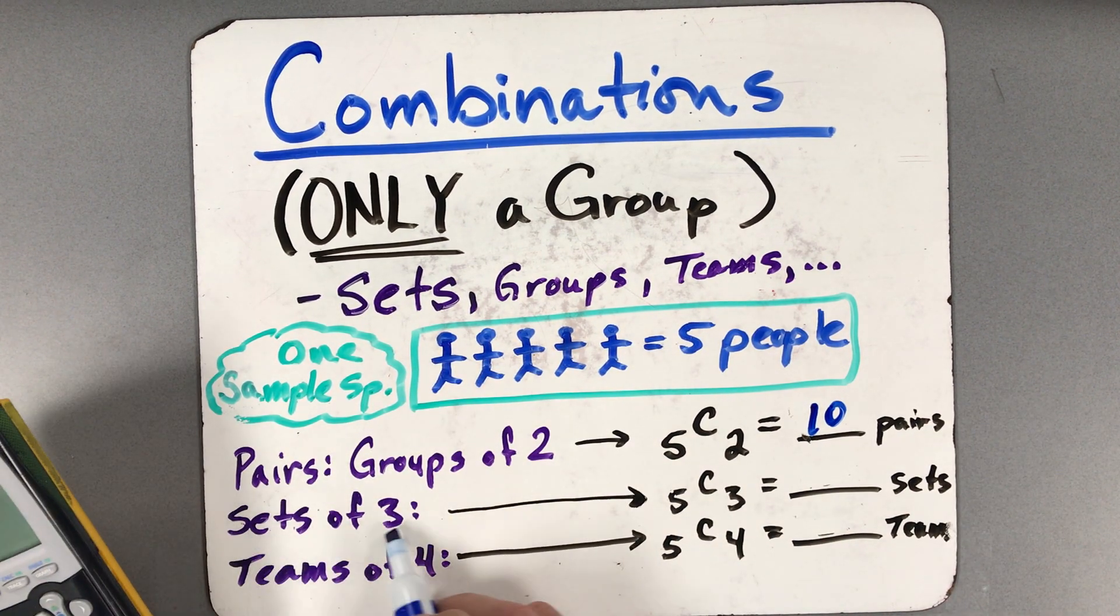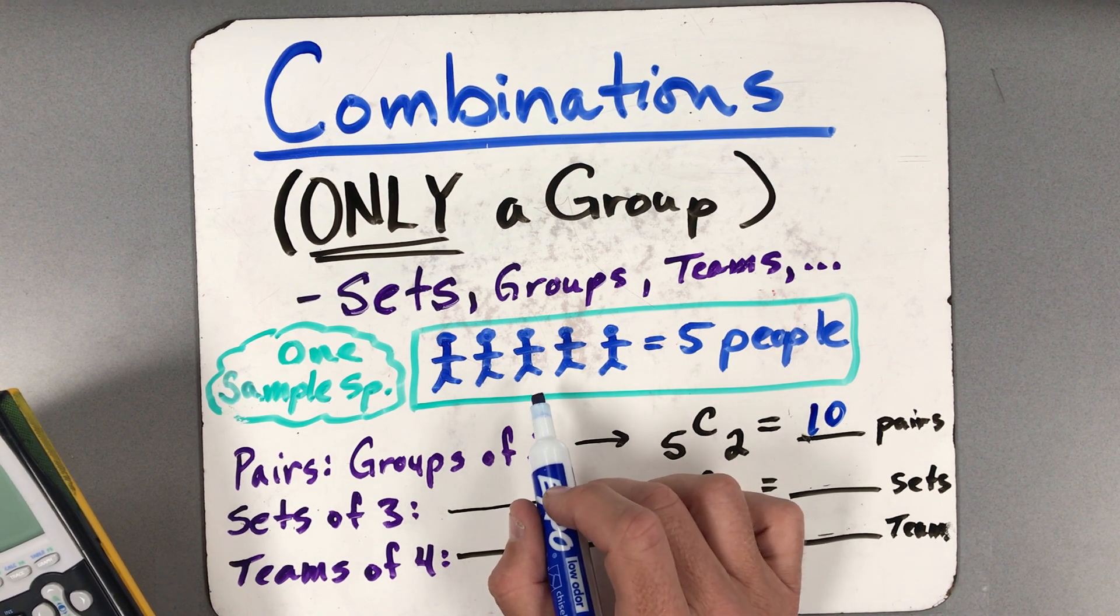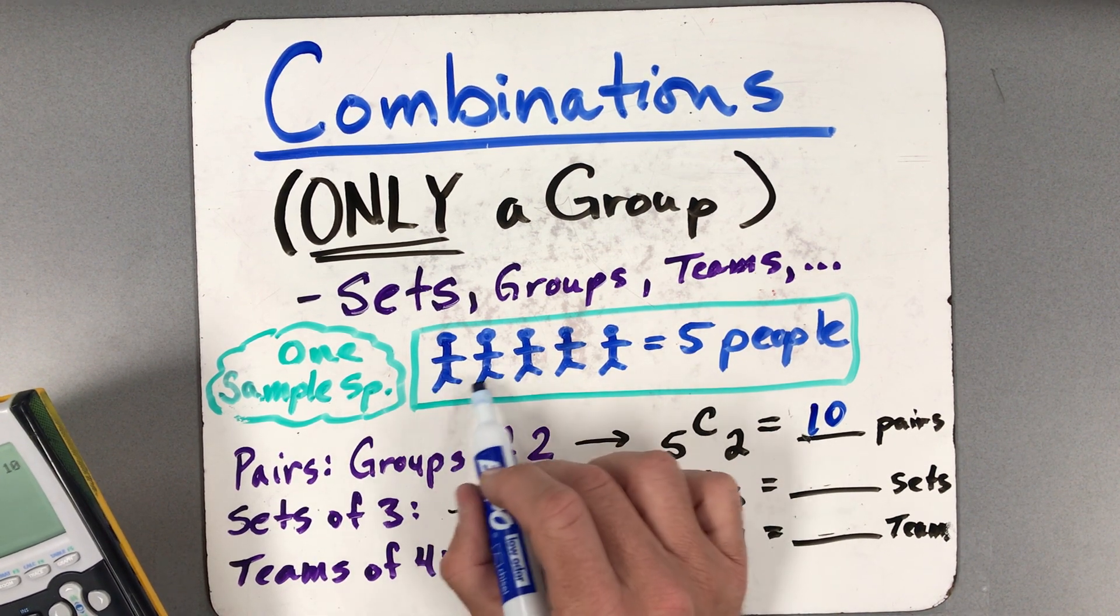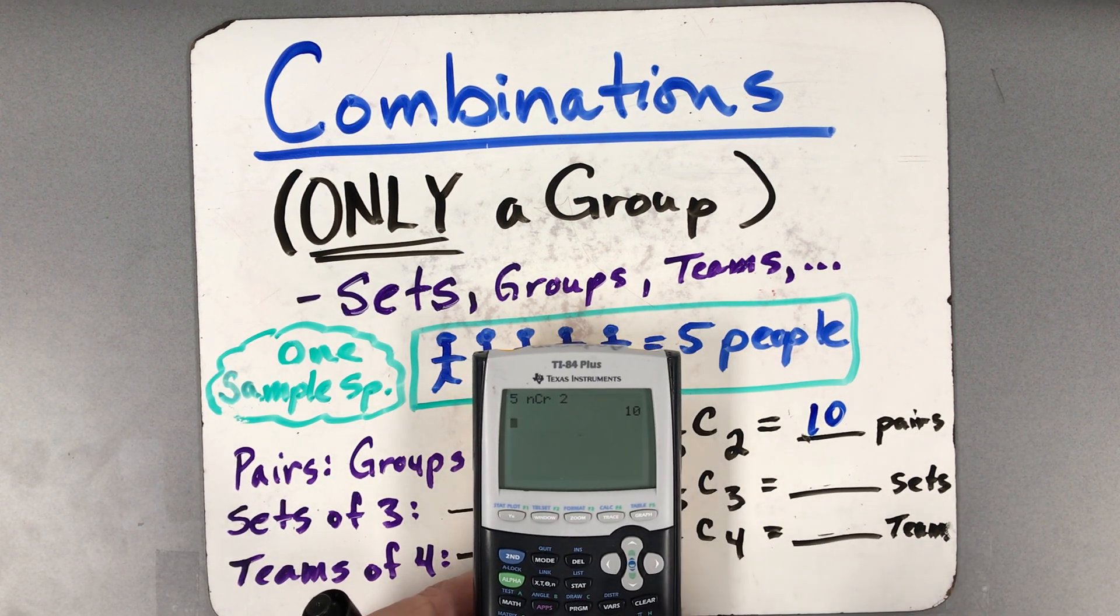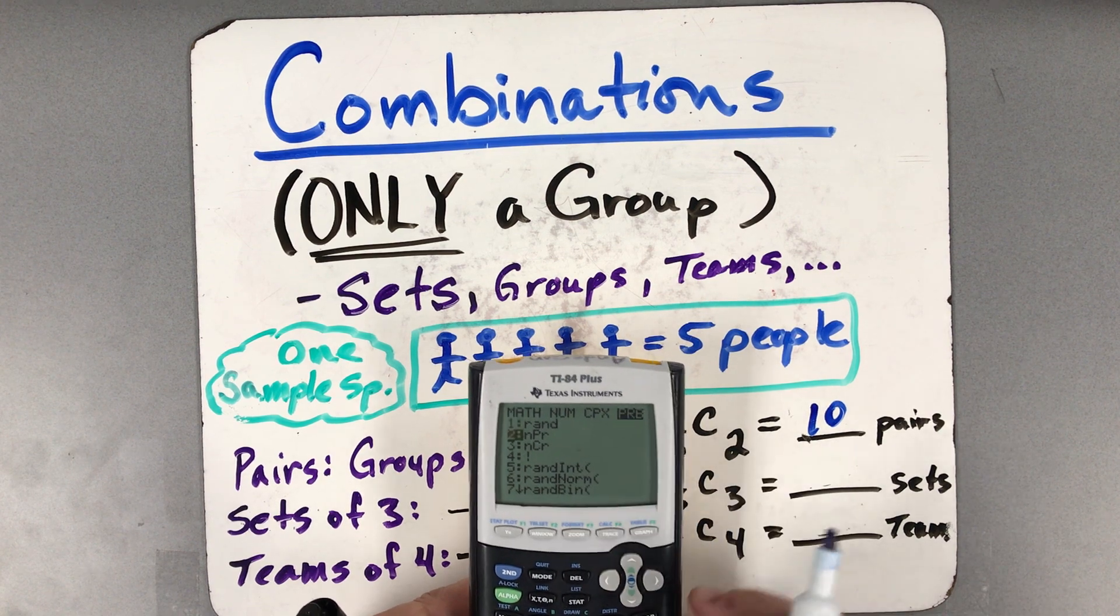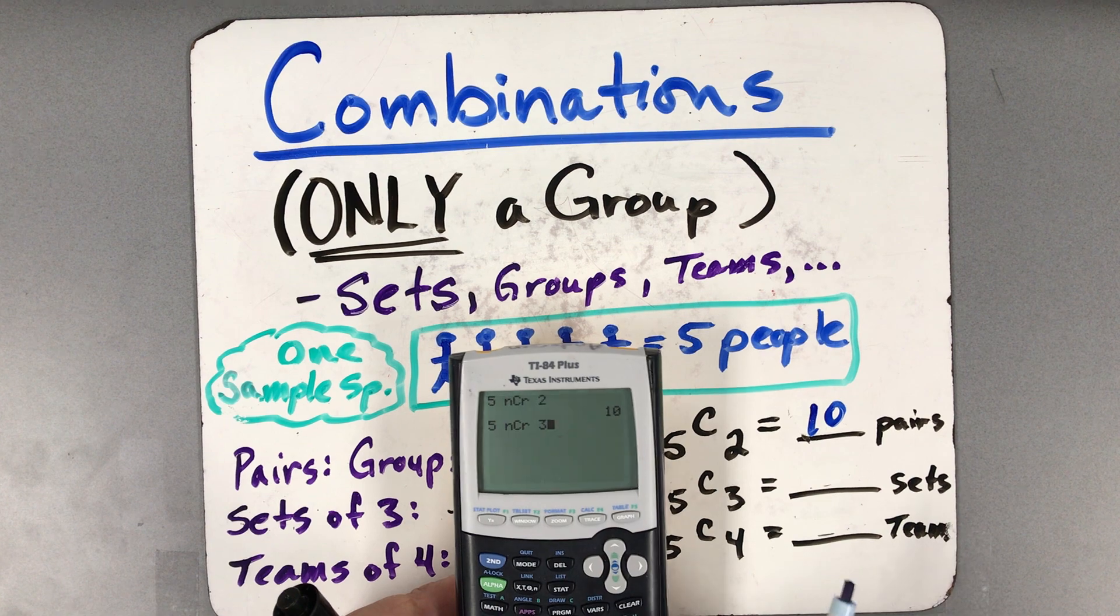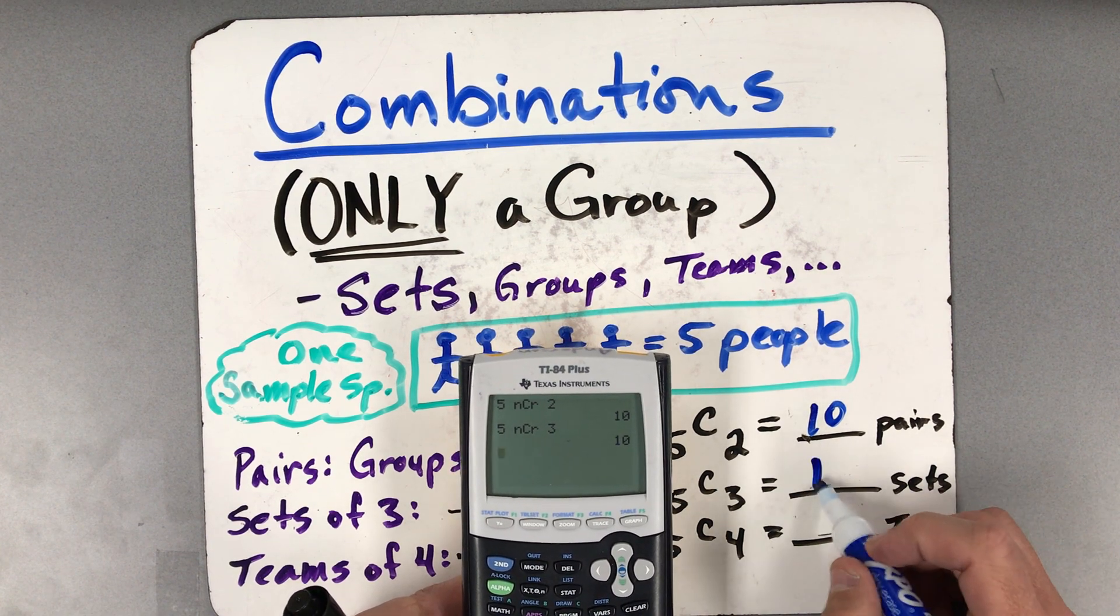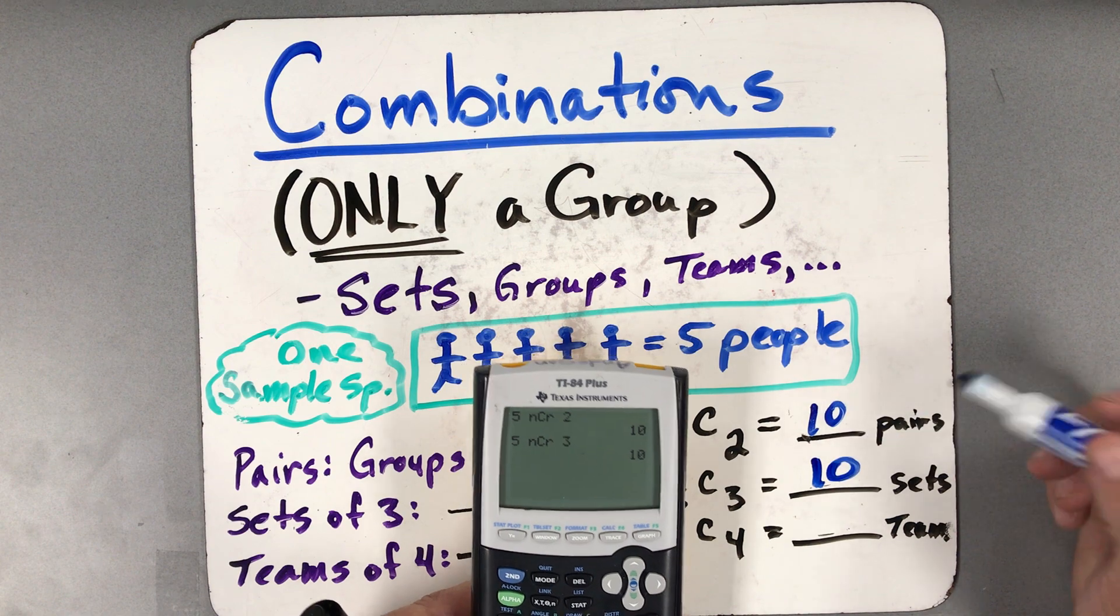Also, if I have sets of three, let's say I want to have these guys get into groups of three. Well, then I could take the first three, I could go the first three and then this one, and so on. But a faster way to figure out all those possibilities would be to just go five people, math, left arrow, nCr, option three, and then put them into groups of three. Again, that's kind of strange, but there are ten ways to do that as well. This isn't typical, but it can happen.